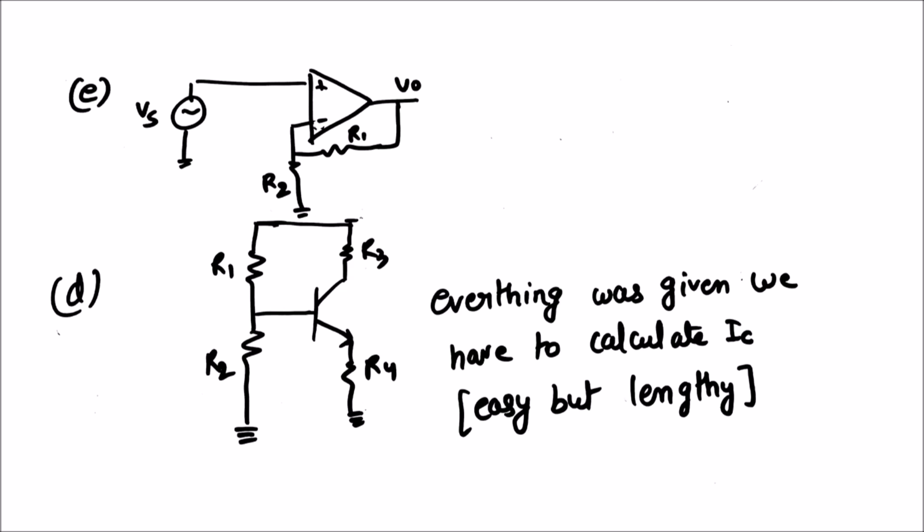One question, this figure was given and they asked the relation between V0 and VS. Another question, they gave a potential divider bias and every value was given and they asked for IC. The question was easy but lengthy because the values were given very awkward and the students told me that the calculator was not acting so fast.